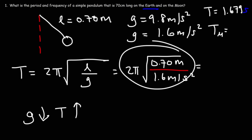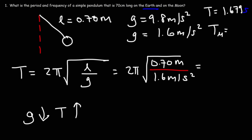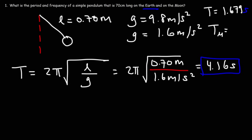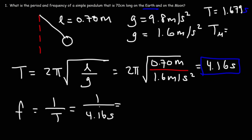As the gravitational acceleration decreases from Earth to the Moon, the period increases — they are inversely related. The frequency on the Moon is 1 over the period: 1 / 4.16 seconds = 0.24 Hz. So that is the frequency of the pendulum on the Moon.